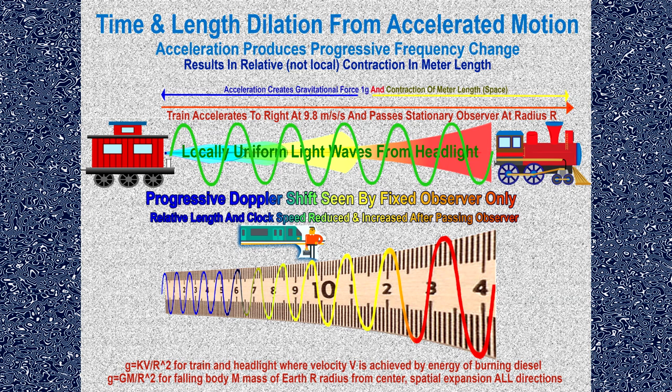If you have a fundamental grasp of the meter, this shouldn't bother you. It's what gives you the right answers on exams. But more than that, it is perfectly sensible. Michelson and Morley proved it — the velocity of c is constant.